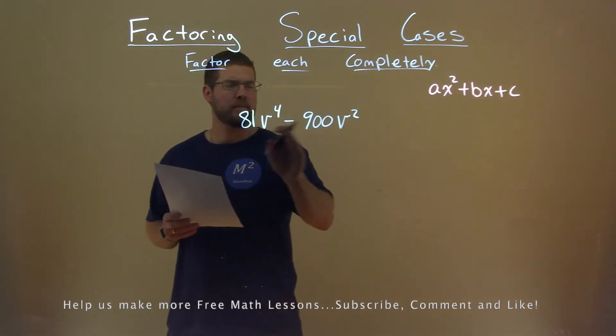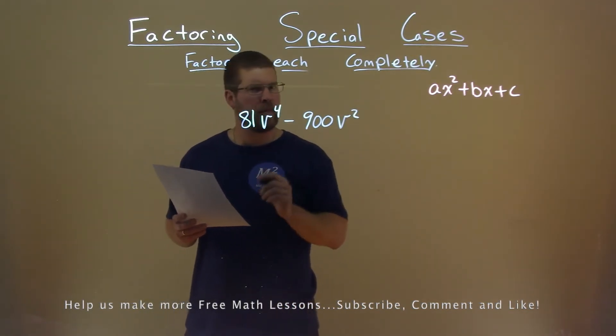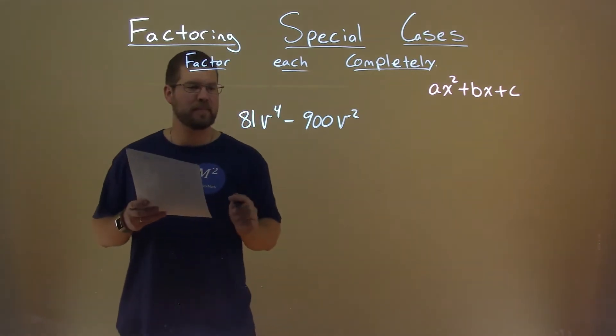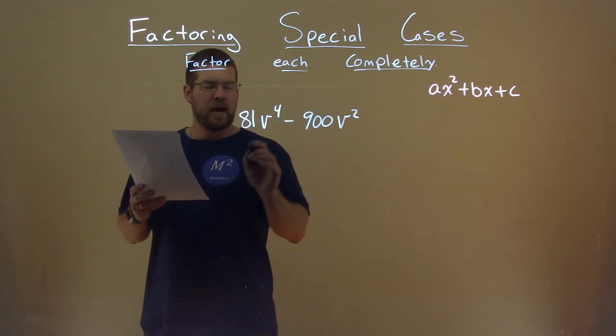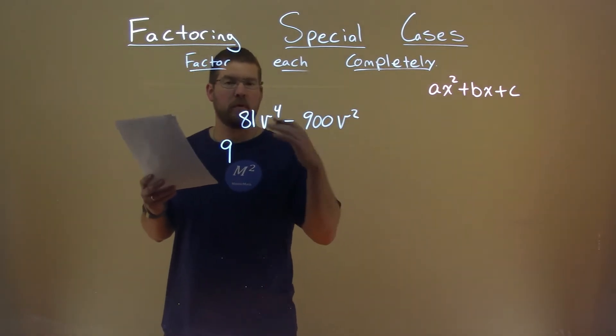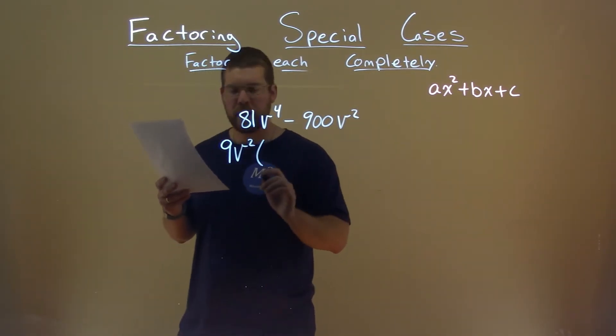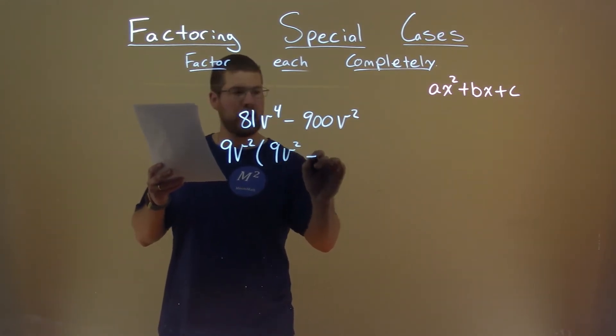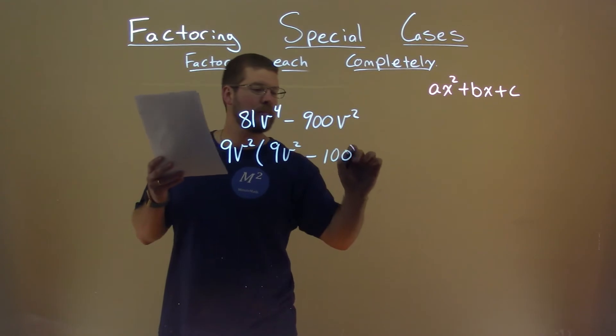First thing I notice is that I can simplify this a little bit right off the bat without factoring. I can pull out a common factor, so it is factoring in a way. 81 and 900 both have 9 in it. v to the fourth power and v squared both have v squared in it. So if I pull that out, I'm left with 9v squared minus 100.